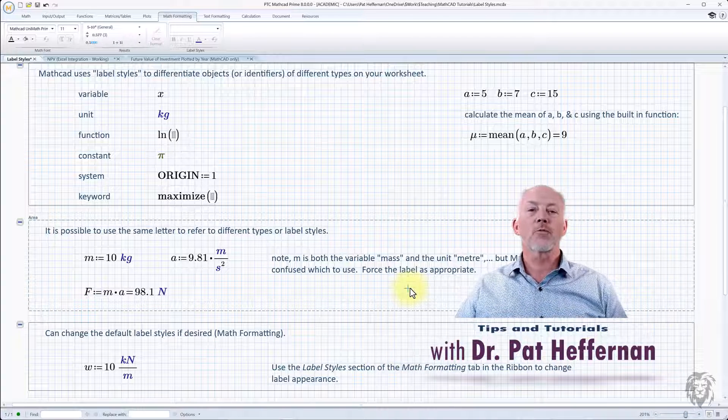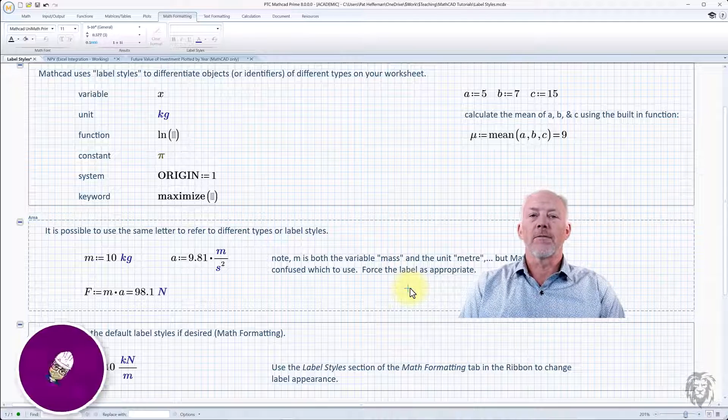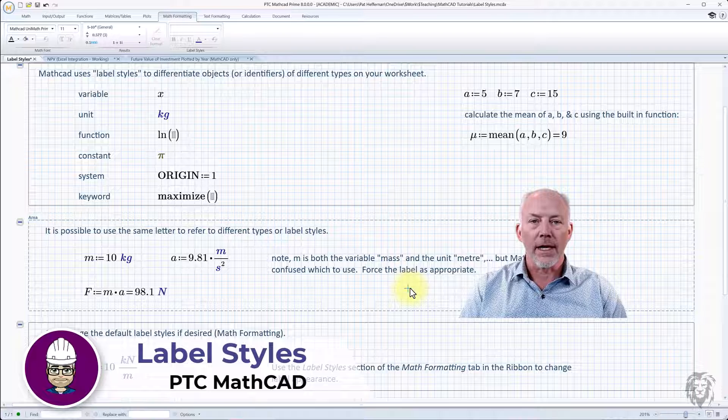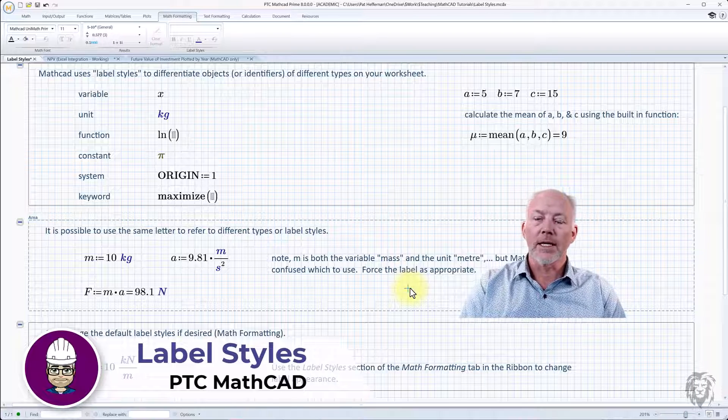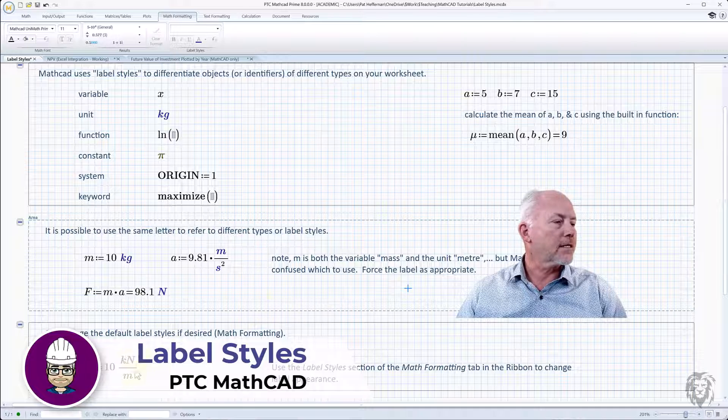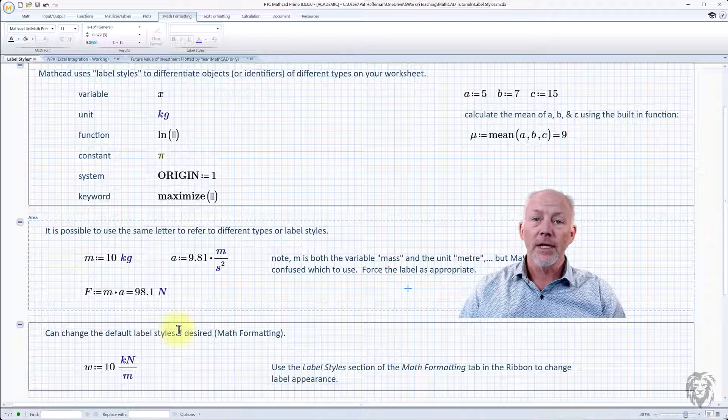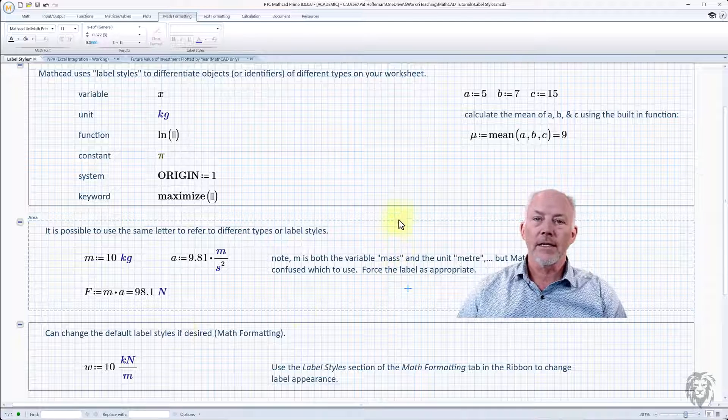So that's it. This is what the label styles are all about. You do have to be aware of them and make sure that you're getting them interpreted correctly because it affects how the calculation is done. And as an aside, if you want to fiddle with the formatting, you know how to do that too. So hopefully that was useful to you, and we'll see you at the next tutorial.